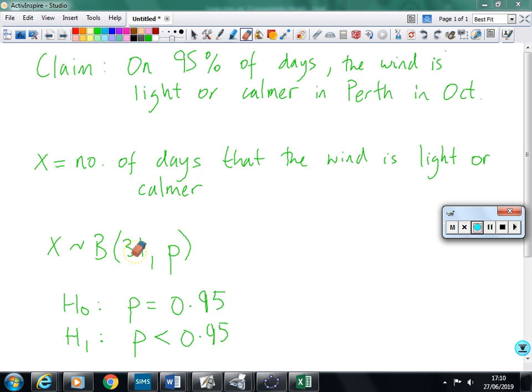So null hypothesis, the travel agent is correct. The probability is 0.95. Alternative hypothesis, this is less than 0.95.